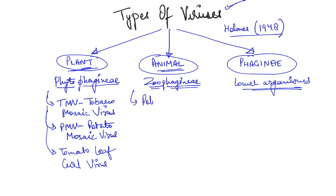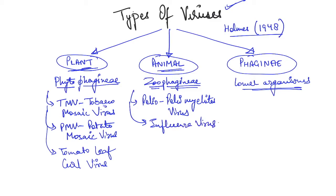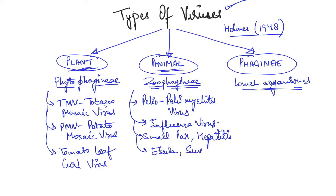In animal viruses, one very common virus is Polio Virus, which is basically Poliomyelitis Virus. Then we have Influenza Virus, Smallpox, Hepatitis, and some more recent ones like Ebola and Swine Flu, which is H1N1. So there are a lot of diseases caused by viruses.